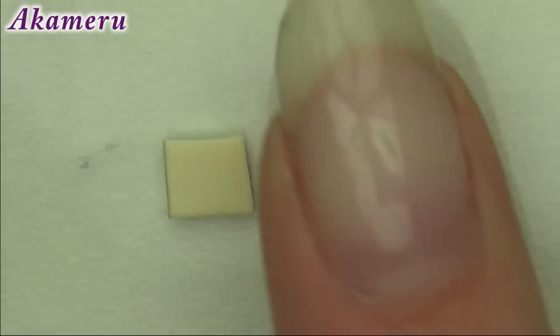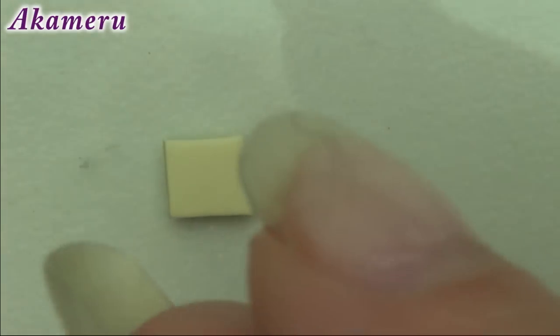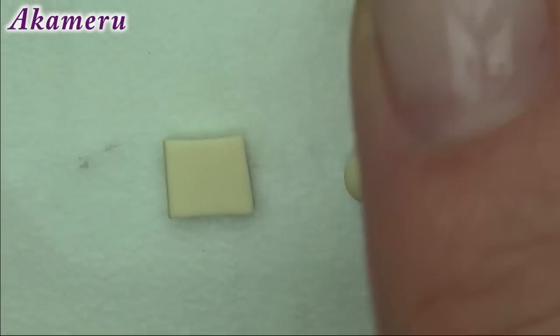For each ravioli square, take a small ball of dough color and press it down on your work surface. Use needle and dotting tools to press down the sides.